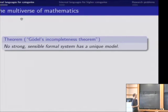So let me begin by quoting this informal version of Gödel's incompleteness theorem, that no strong and sensible formal system has a unique model. But I'm interested more generally in the situation where the theorem doesn't necessarily apply verbatim, but we have some formal system, and it turns out that it doesn't have a unique model for whatever reason.